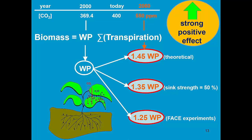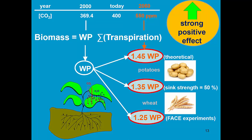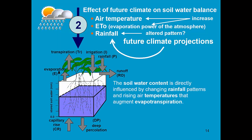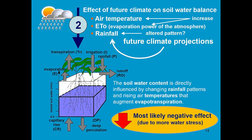In AquaCrop, by default the increase will be 35% because a sink strength of 50% is assumed. The user can adjust that sink strength, which might be different for different types of crops. Next to the positive effect of higher CO2 concentration, AquaCrop will also simulate the effect of the increase in temperature, the increase in evapotranspiration, and the altered pattern of rainfall, which more likely will have a negative effect.